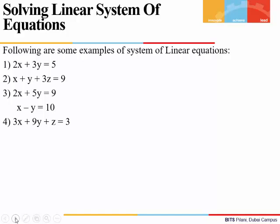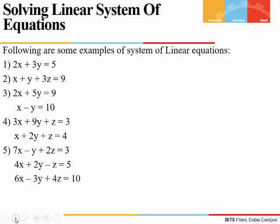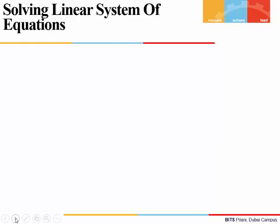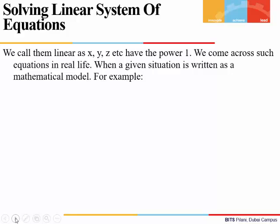Let's look at some examples. In the first one, we have a linear equation where we have two variables x and y. In the second example, we have one equation in three unknown variables x, y, z. In the third one, we have two equations in two unknowns. In the fourth one, we again have two equations but now with three unknown variables x, y, z. And in the fifth example, there are three equations and three unknown variables x, y, z. When we take more than three variables, we generally denote them by x1, x2, xn, etc. We call such a system a linear system of equations because the power of all the variables is 1.